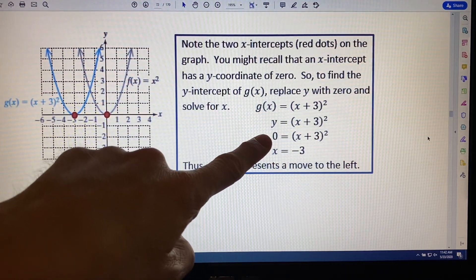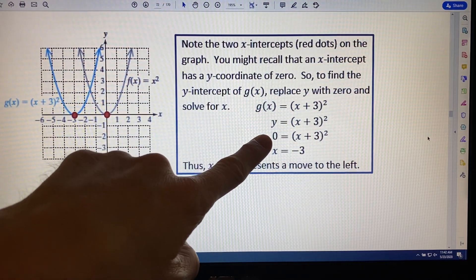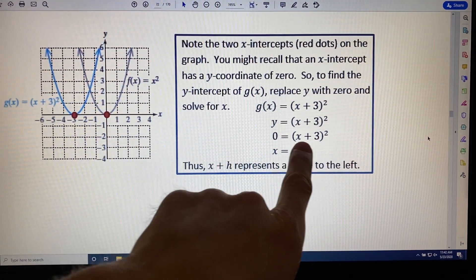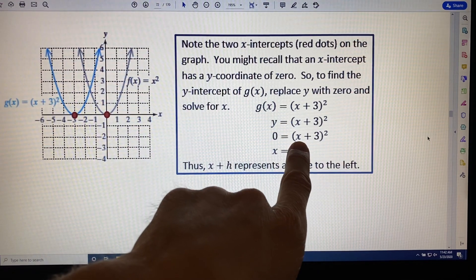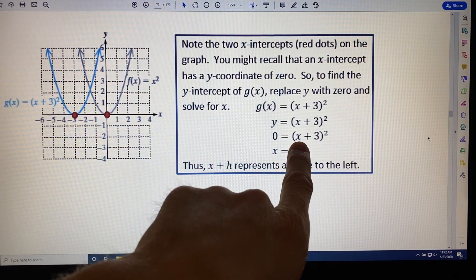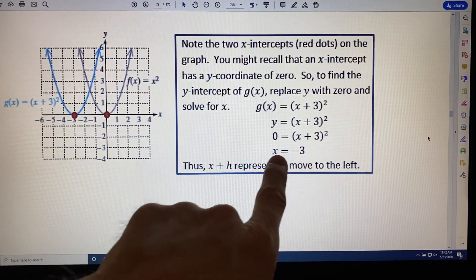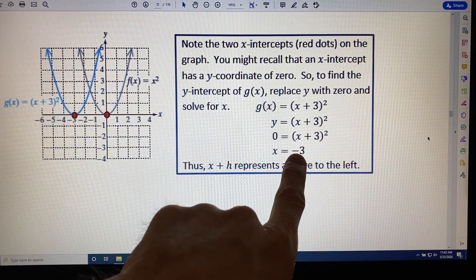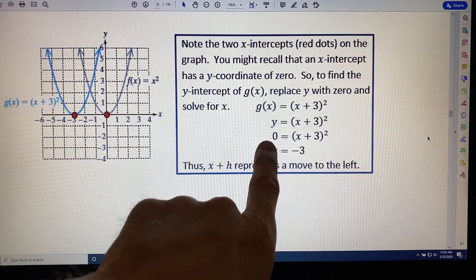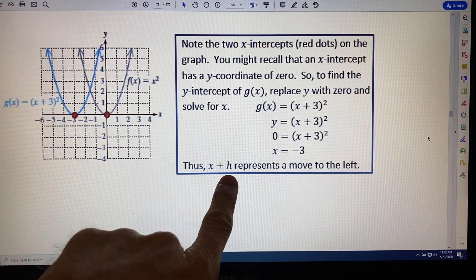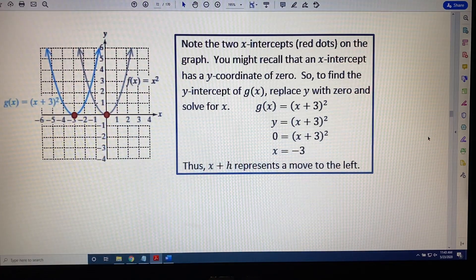Replace y with 0, and then solve. So if we want to get 0 here, then the thing inside the parentheses needs to be 0. What value of x, when you add 3, will give you 0? Well, the answer is -3. x has to be -3, so that when you add 3, you get 0, so that when you square it, you get 0. And this is the reason why (x + h) represents a move to the left.